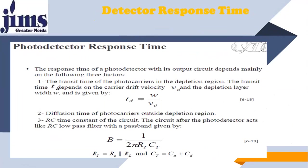Now, photodetector response time. The response time of a photodetector with its output circuits depends mainly on three factors. Number one: transit time of the photo carriers — the time taken by the charge carriers to collect at their respective ends. When photons are incident on the intrinsic layer, electrons and holes become free and collect themselves at their terminals. The transit time TD is W divided by VD, where W is the width of the depletion region and VD is the drift velocity of the electrons.